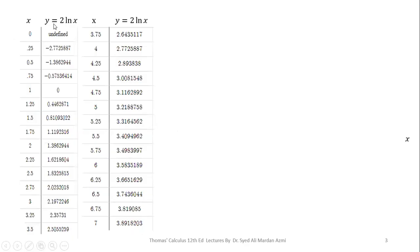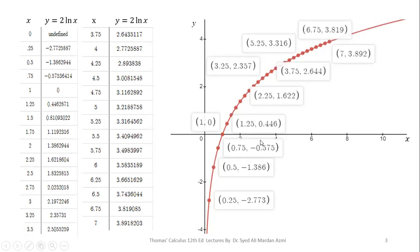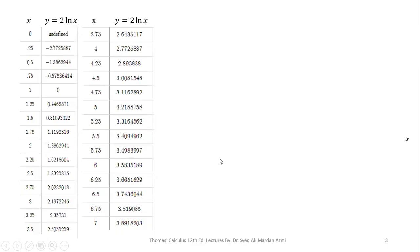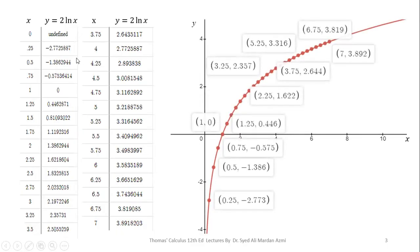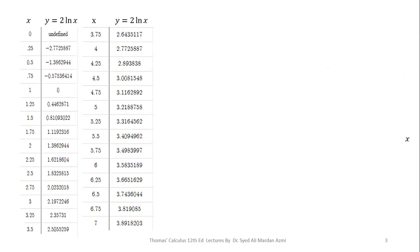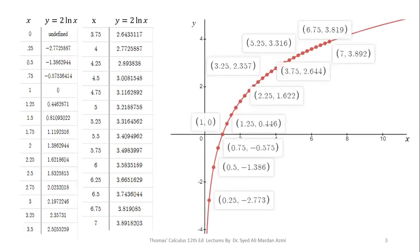Similarly, for the other graph y is equal to 2 natural log of x, we use different values of x and calculate the corresponding values of y. Please note the difference between this graph and the previous one: for the same values of x, the values of y will become double. For example, at x equal to 1.25, y for ln(x) is 0.22, but for 2ln(x) that value is doubled, so the graph is lifted up toward the y-axis.